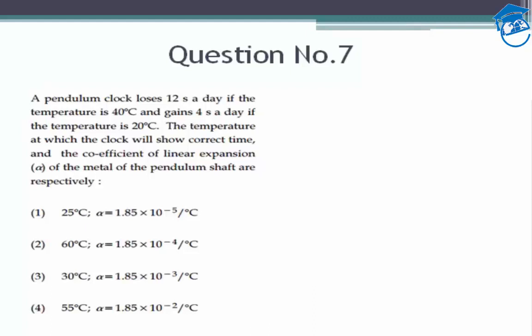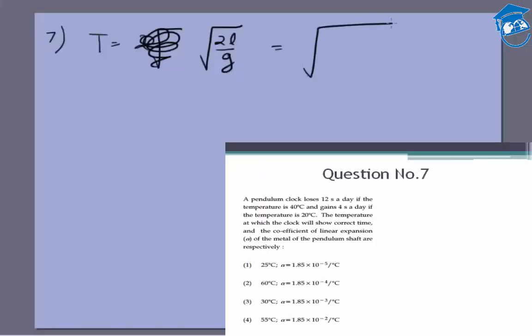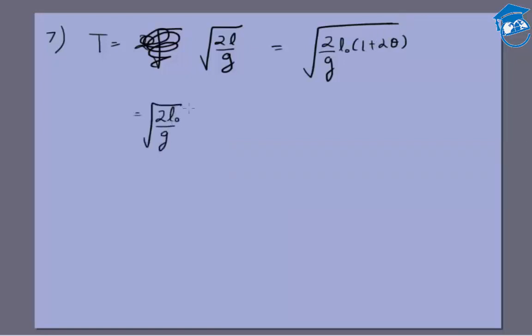If L changes, the time period will change as root 2 by G times L₀ times (1 + αθ), where θ is the change in temperature. We can write this as 2L₀ by G times root of (1 + αθ) to the power 1/2. Now because αθ is very small, we can approximate it.